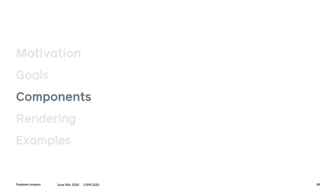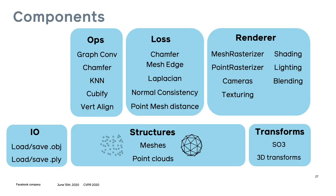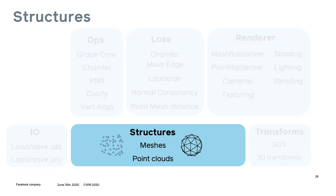PyTorch 3D has multiple layers. The foundation layer consists of data structures for 3D data, data loading utilities, and composable transforms. These data structures in particular enable the operators, loss functions, and renderer in the second layer to efficiently support heterogeneous batching.